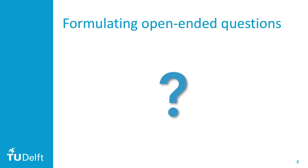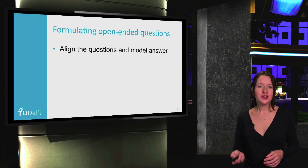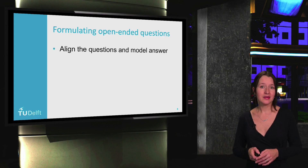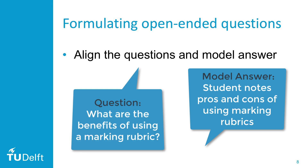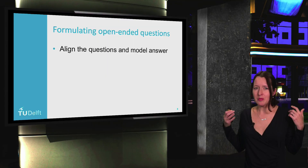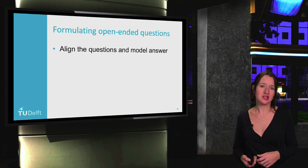But what about open questions? Do similar guidelines apply? For these, first check that the question and the model answer are aligned. This might sound obvious, but after developing the model answer, read the question again, just to check that you are asking exactly what you expect the students to answer. It's very easy to include information in the model answer that is not solicited by the question. This happens when you have an idea in your head of what you want, but you don't actually prompt the students to give you that specific information.